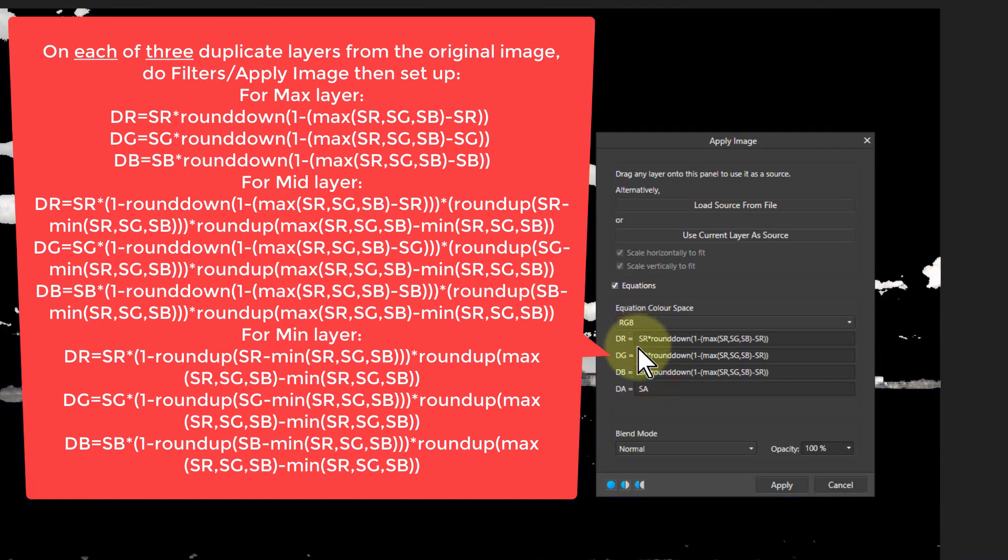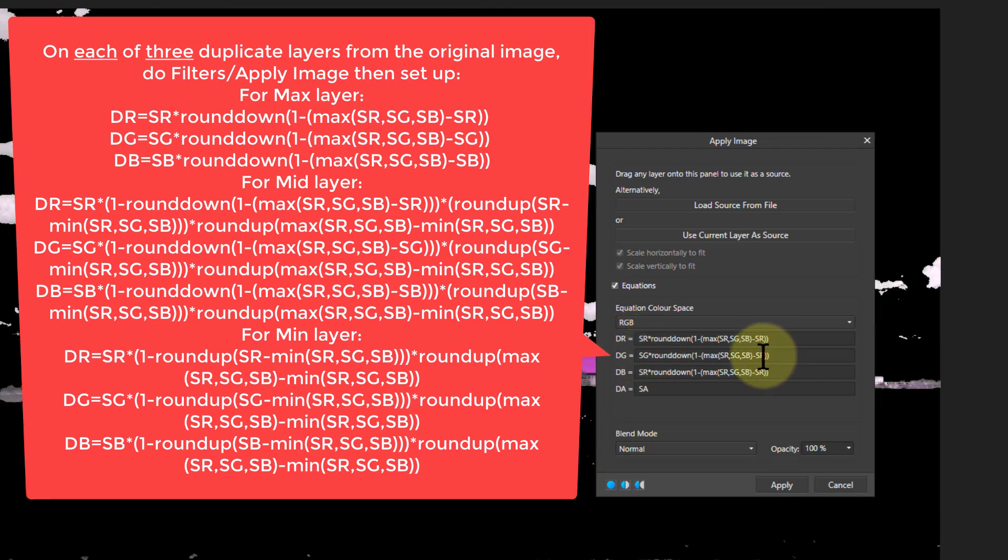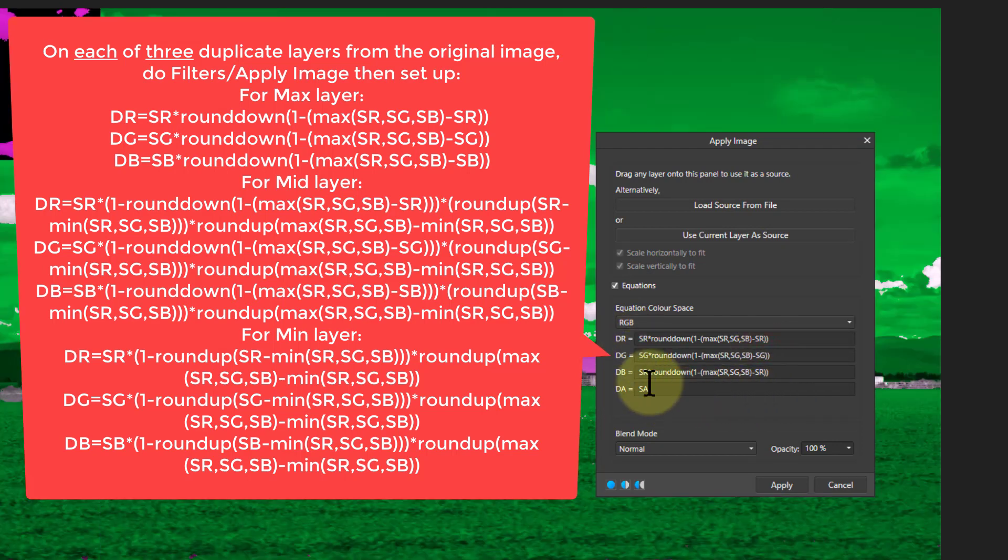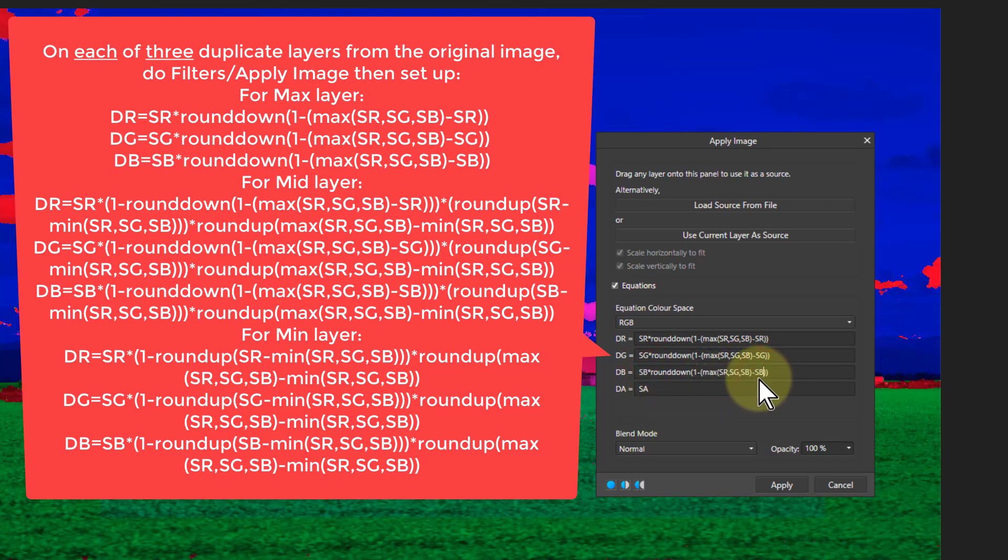And we put this in each one of these, but we're going to change it to the green here, and green there, and blue there, and blue there. And so we get red, green, and blue on each of these. And then you apply the image and you do that to each of the three layers.